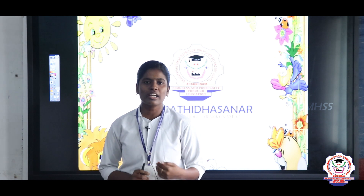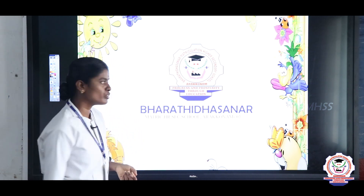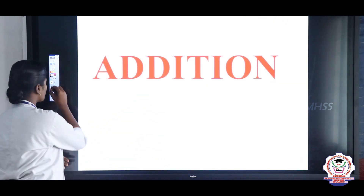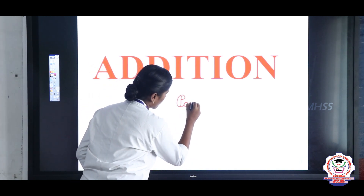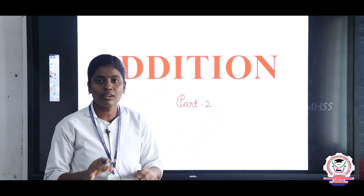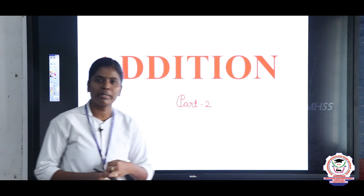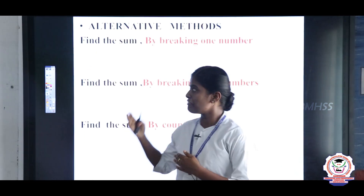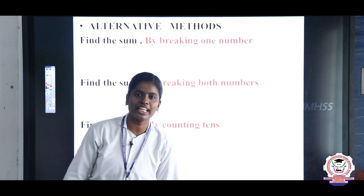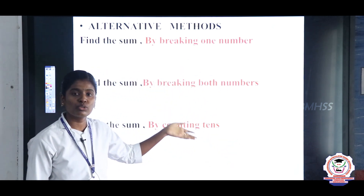Our second lesson name is addition. Today we are going to see part 2. The lesson name is addition. What is addition? When the things are put together, we do addition. Today's topic is alternative methods: find the sum by breaking one number, find the sum by breaking both numbers, and finally find the sum by counting tens. We use these three steps to do the addition.